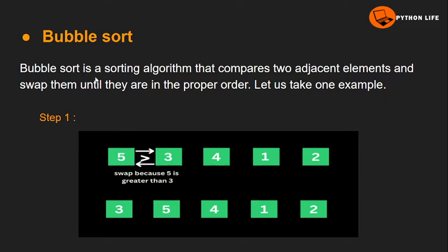Bubble sort. In bubble sort, we compare the adjacent elements and do swapping. Bubble sort is a sorting algorithm that compares two adjacent elements and swaps them until they are in the proper order.